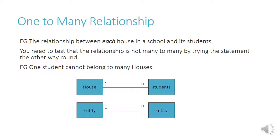A one-to-many relationship. The relationship between the houses at school and its students — you get one house to many students. You need to test that the relationship is not many-to-many by trying the statement the other way around. Can one student belong to many houses, which would make it a many-to-many? No, it cannot.